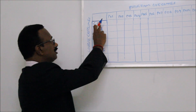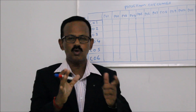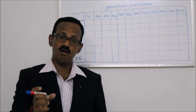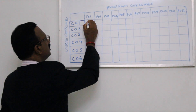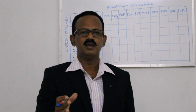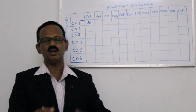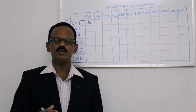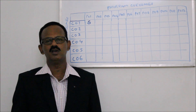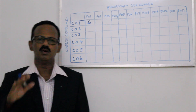Now, if course outcome 1 is compared with program outcome 1 and you feel that course outcome 1 has something to do with engineering knowledge and it is very strongly correlated, then you can put S for strong. Otherwise you put M if it is moderate, and if you feel it is very weakly correlated with program outcome 1, you can put W or just leave it blank. We will concentrate only on those course outcomes which are strongly or moderately correlated with the program outcomes.